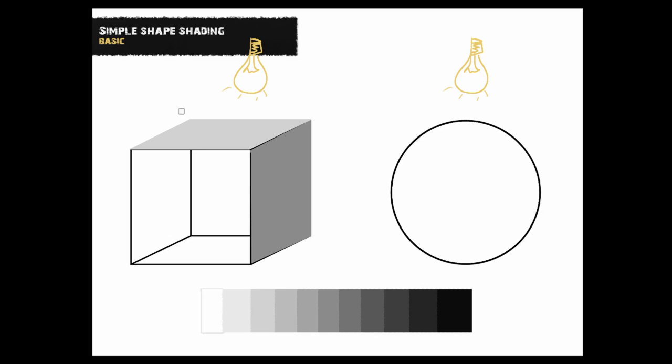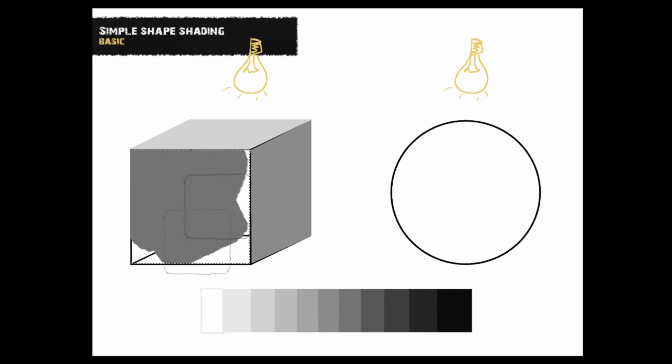The top one is getting the most light, so it's very bright — that means this one doesn't get as much light, so it's going to be darker. We take a darker shade of grey and put it in there. And now the last piece of the cube is to color in the darkest area. In this case you can decide which one you want to be the darkest. I'm going to decide this one is the darkest — but we don't want to make it a million times darker, just a little bit. And while I do that, I'm going to explain what just happened.